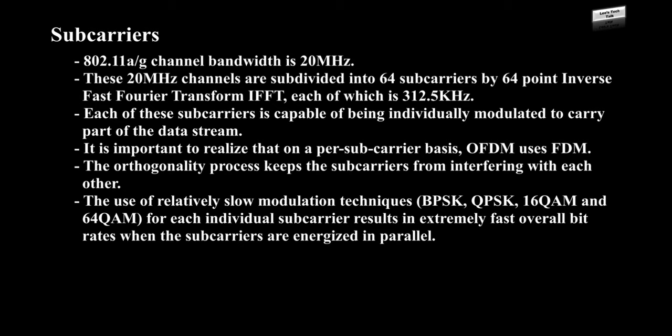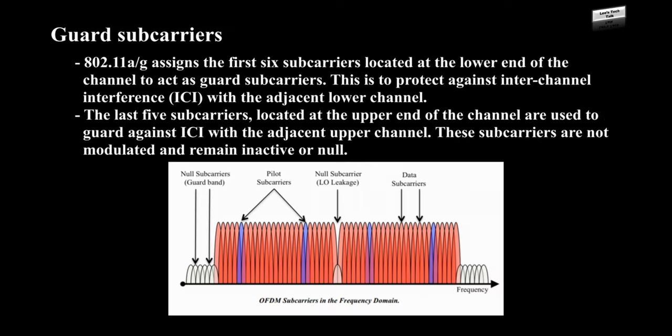The use of relatively slow modulation techniques — BPSK, QPSK, 16 QAM, and 64 QAM — for each individual subcarrier results in extremely fast overall bit rates when the subcarriers are energized in parallel.